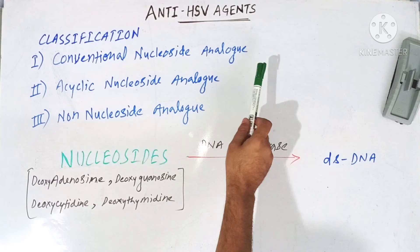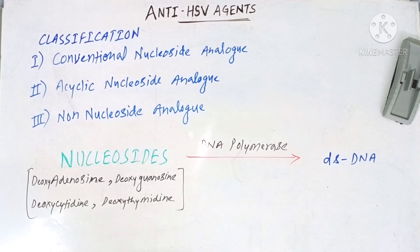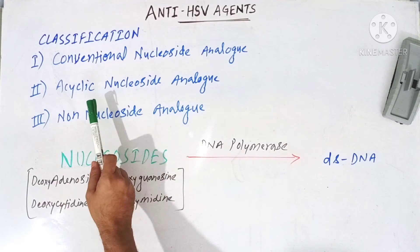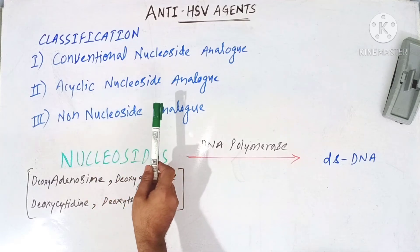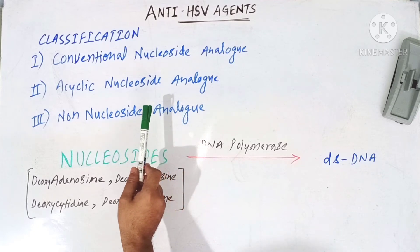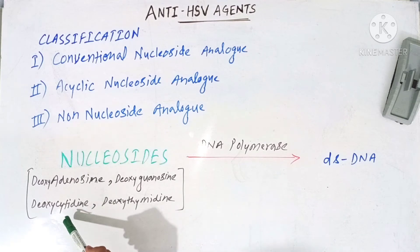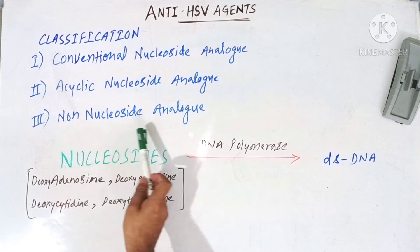The first class is conventional nucleoside analogs — drugs which are structurally similar to the naturally occurring nucleosides like deoxyadenosine, deoxyguanosine, deoxycytidine, and deoxythymidine. The second class is nucleoside analogs that have purine or pyrimidine bases in their structure, but in place of deoxyribose sugar they have an acyclic molecule. The third class is non-nucleoside analogs — drugs which do not have any structural resemblance with the nucleosides.